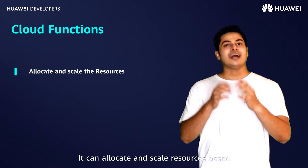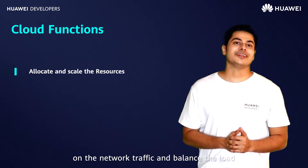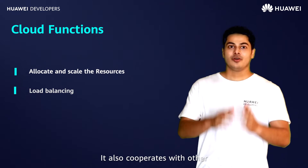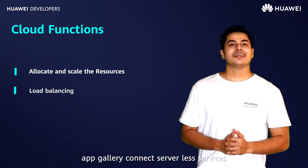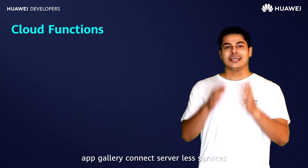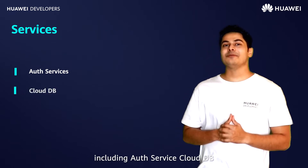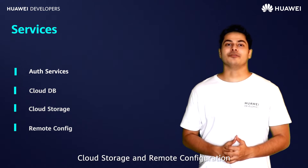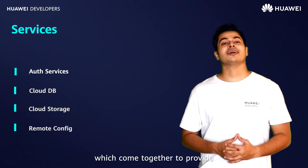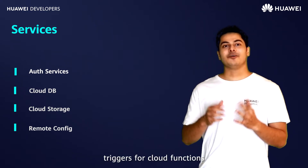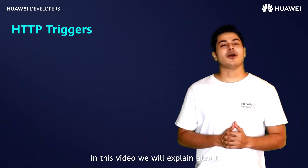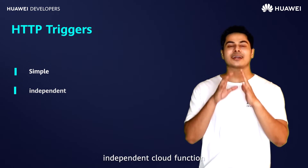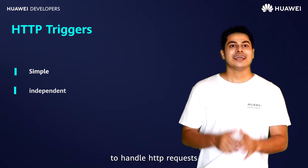It can allocate and scale resources based on network traffic and balance the load. Also, it cooperates with other AppGallery Connect serverless services including Auth service, Cloud DB, Cloud Storage, and Remote Configuration, which come together to provide triggers for cloud functions. In this video, we will explain about HTTP trigger, which is a simple independent cloud function to handle HTTP requests.